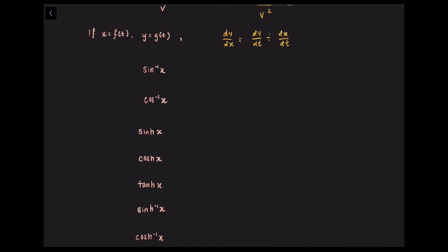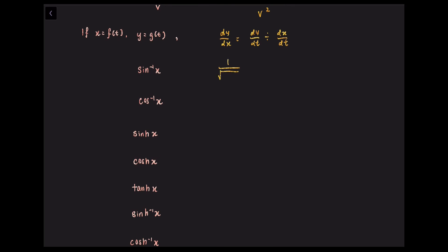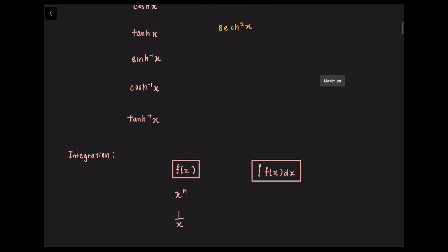Differentiating inverse sin x, we get 1 over the square root of 1 minus x squared. Differentiating inverse cos x, we get negative 1 over the square root of 1 minus x squared. Differentiating sinh x, we get cosh x. Differentiating cosh x, we get sinh x. Differentiating tanh x, we get sech squared x. Differentiating inverse sinh x, we get 1 over the square root of 1 plus x squared. Differentiating inverse cosh x, we get 1 over the square root of x squared minus 1. Differentiating inverse tanh x, we get 1 over 1 minus x squared.